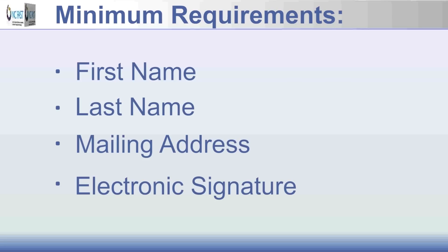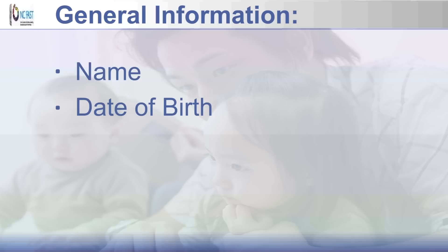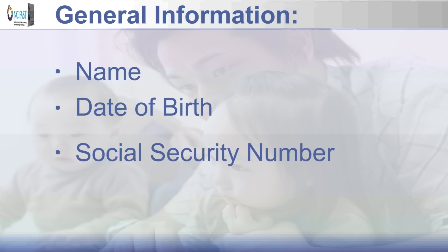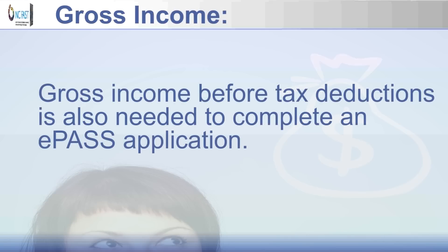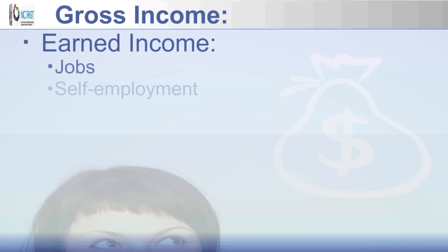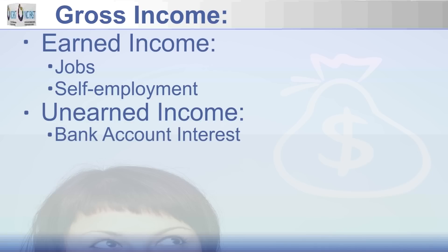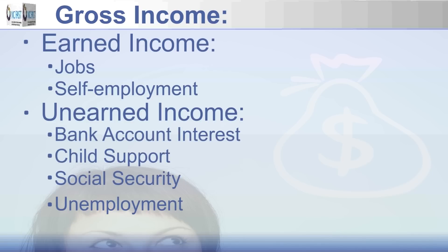Medical assistance requires a completed application. General information you may need to provide for household members or individuals applying for assistance includes name, date of birth, and social security number. Gross income before taxes and deductions is also needed to complete an ePASS application. Gross income includes earned income from jobs and self-employment and unearned income which includes bank account interest, child support, social security, and unemployment.